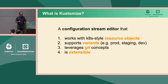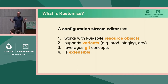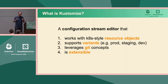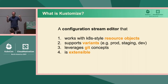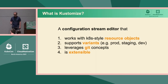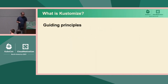Kustomize is a configuration stream editor that works with Kubernetes YAML. It's also very good at working with variants. Everybody has multiple environments, multiple clusters, multiple namespaces, and Kustomize is really good at expressing the differences between these different environments. If you've got production, staging, and development, and they all share like 90% in common, Kustomize allows you to succinctly describe the differences. It plays nicely with Git — it can read information from Git, and you're encouraged to write the information back into a Git repository. And it can be extended, which is the core of this talk.